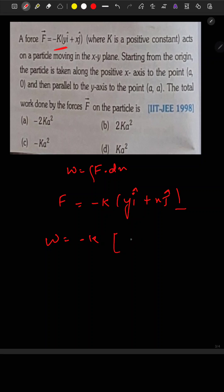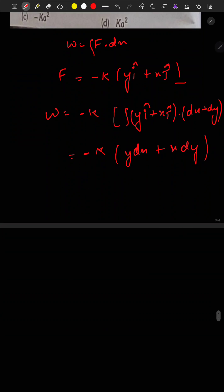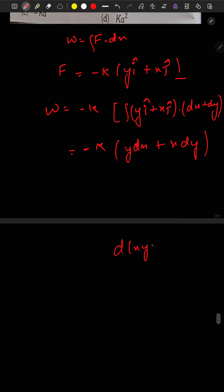to minus K into integration of (y i cap plus x j cap) dot (dx plus dy), which equals to minus K times (y dx plus x dy). Now here we know a simple formula of differentiation.